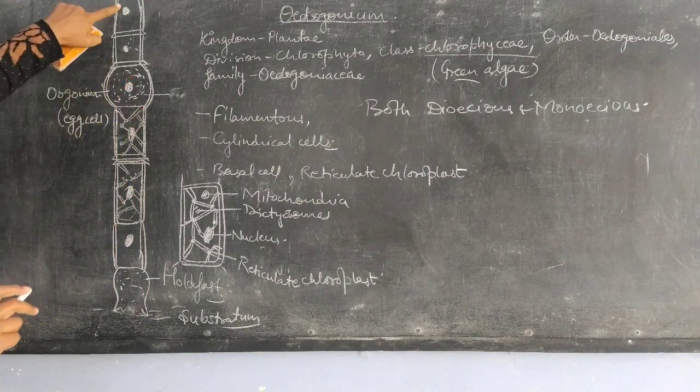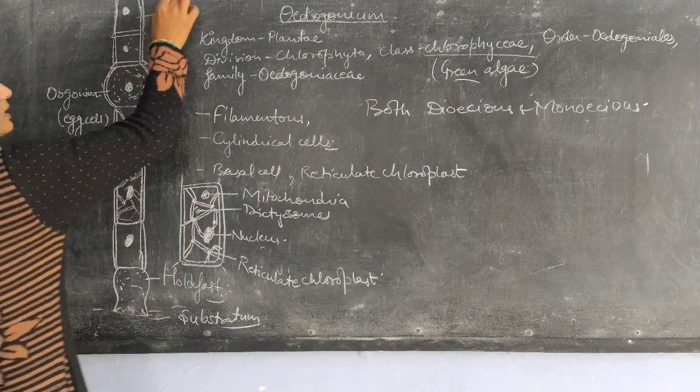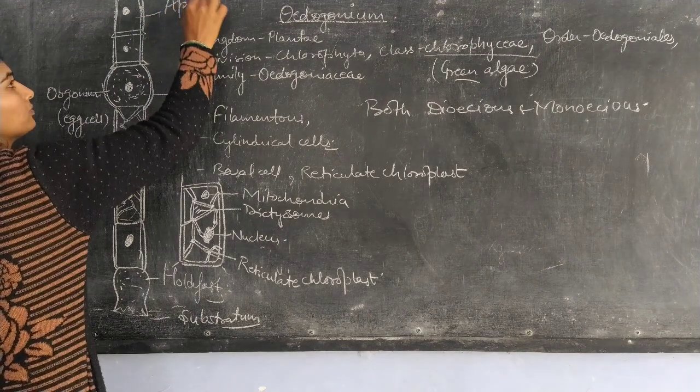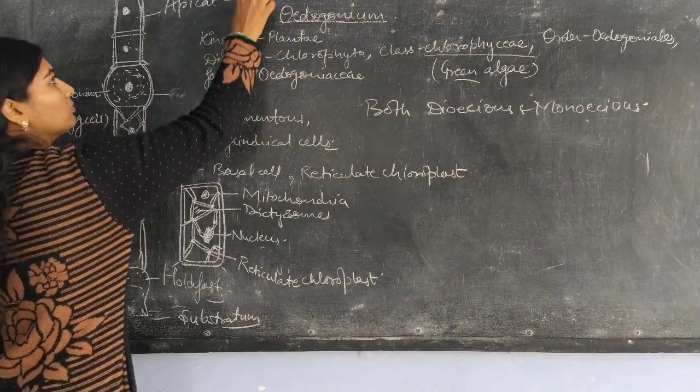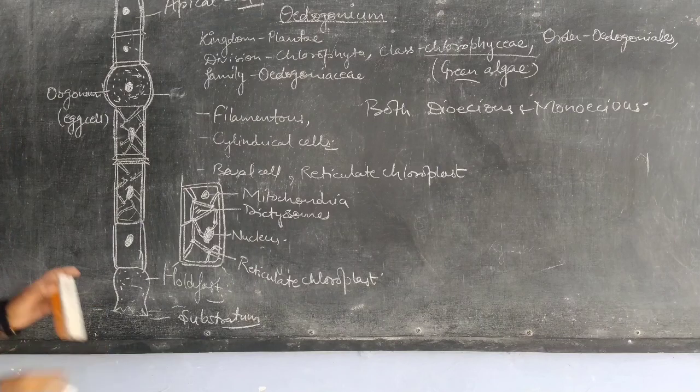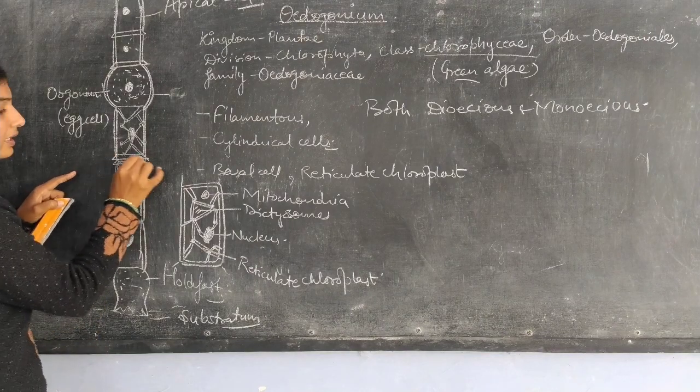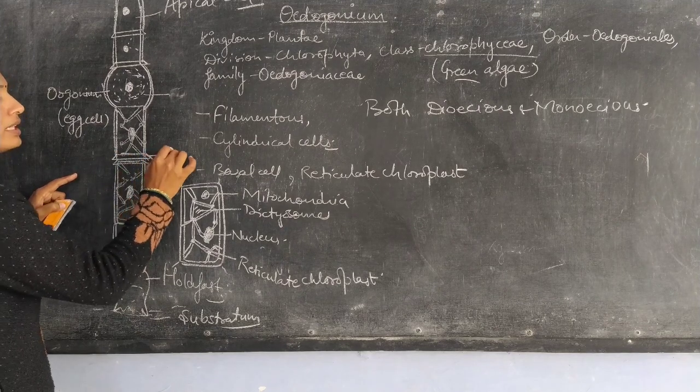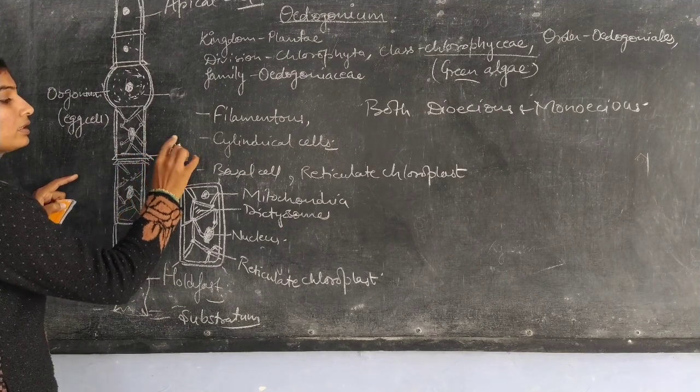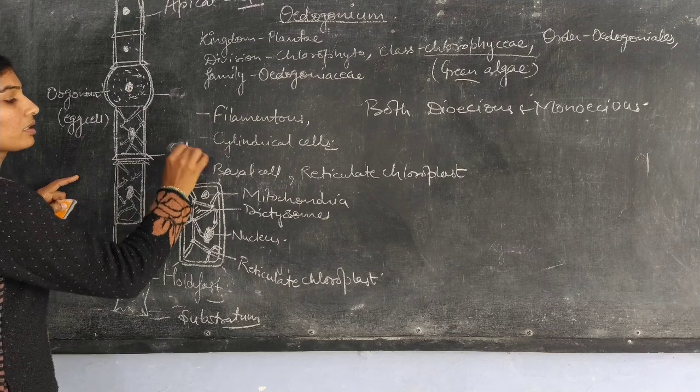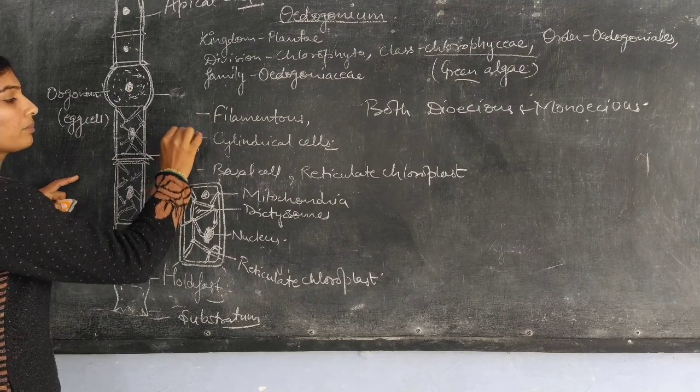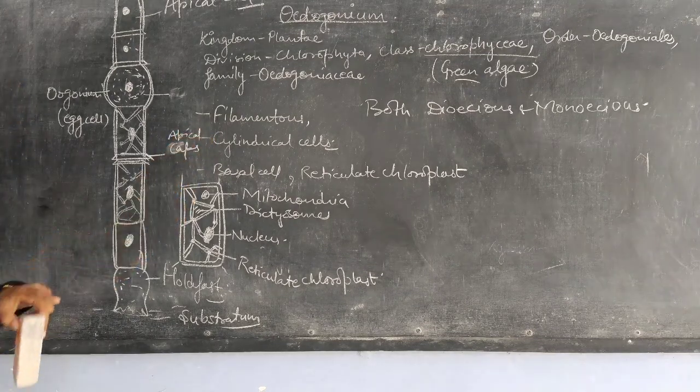This top cell is called the apical cell. These vegetative cells have apical caps. These are apical caps present on the cells.